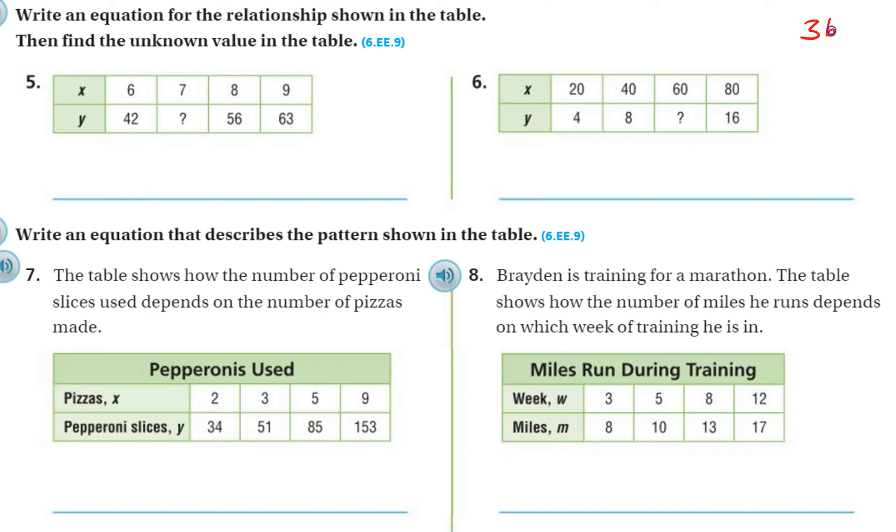Alright, now I'm on the bottom of page 369 in the GoMath textbook. Follow along. It says write an equation, so we're going to write an equation. We have to have an equal sign, I know that, for the relationship shown in the table. Then find the unknown value. So I know I need an equation and then I'm also going to need to find this missing number.